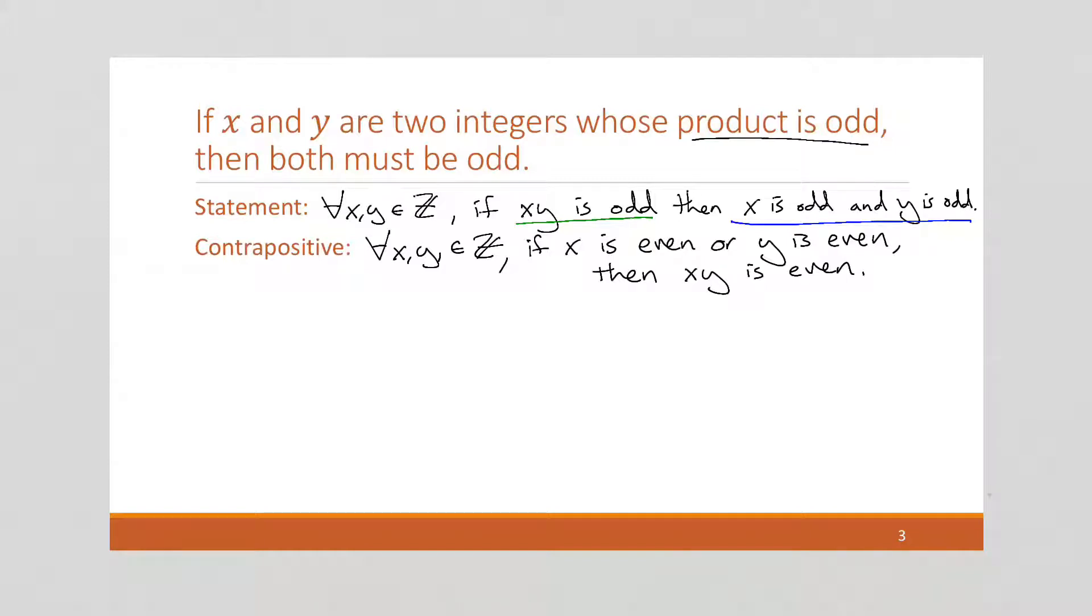All right, we always want to label our proof. Okay, we're going to do our direct proof, starting by supposing the first part of this contrapositive. Suppose x and y are any integers.